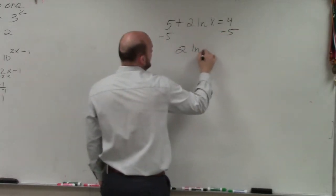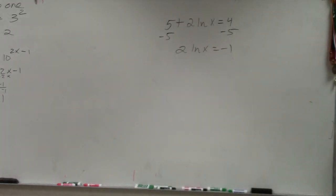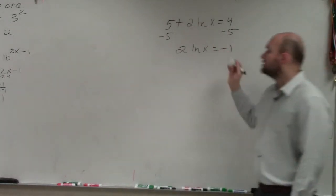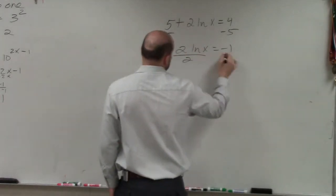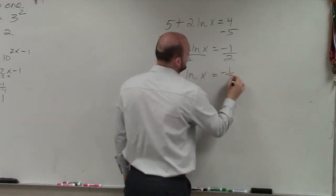So therefore, I have 2 ln of x equals negative 1. And to go ahead and subtract this, I now am going to want to divide by 2. So therefore, I have ln of x equals negative 1 half.